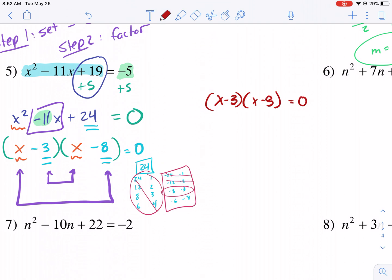So now we have x minus 3 equals 0 or x minus 8 equals 0. We have two answers with quadratics. So we get x equals 3 or add 8, we get x equals 8. Two answers there.